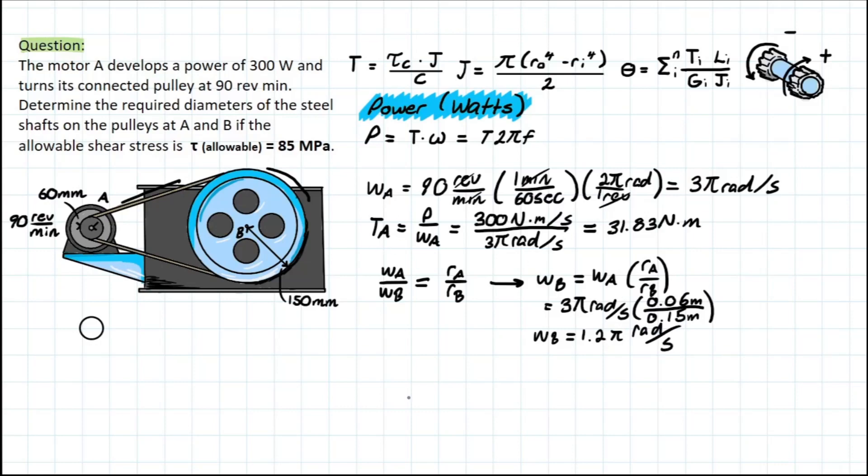And once again, we're doing a very similar thing where we have to now get the torque at B, which is equal to the power developed in the system over the angular velocity of B. And we know how those units work already up top over here. So we have 300 over 1.2 pi, which will equal 79.58 newtons per meter.